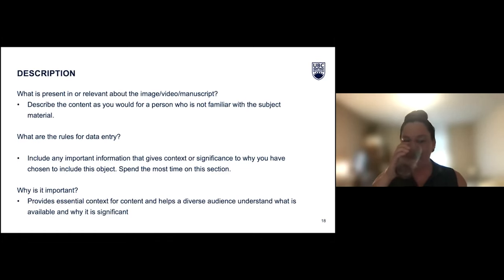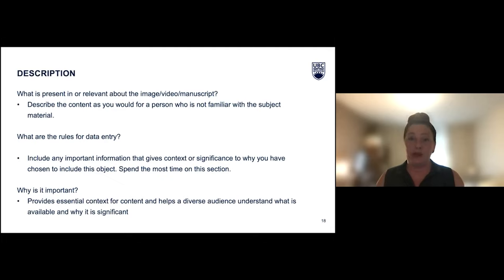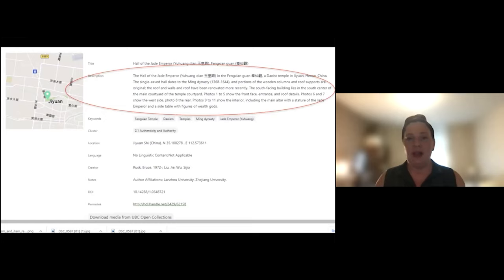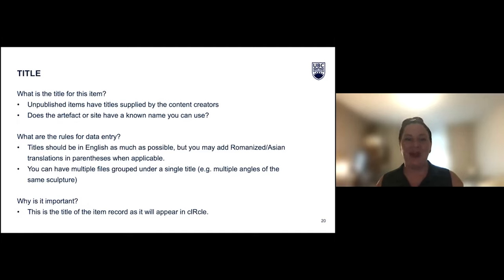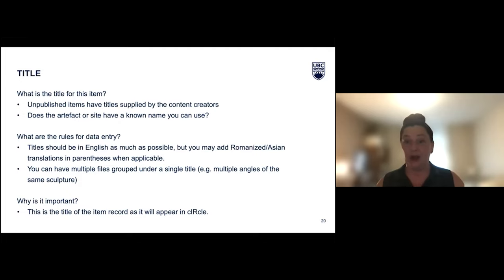The rules for data entry for the description field are simply that you have to put something in there. We recommend that people generally spend the most time here because it's the most valuable section and tends to be the most challenging to get right. It's essential because it provides that really important context. The title, as you can imagine, is pretty important as well. Unpublished items have titles that are supplied by the content creators, but artifacts or sites might have names they already go by and are known as, so you can use those names in the title field because you know other people will know it by that name and it will make it easily findable. Because our repository is in a North American context, most of our material is in English primarily, but there are other versions of that title that are important for people trying to find this material.